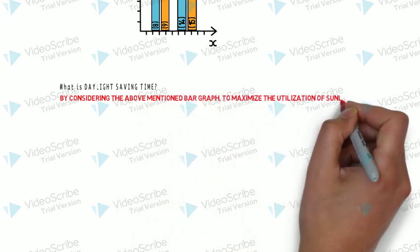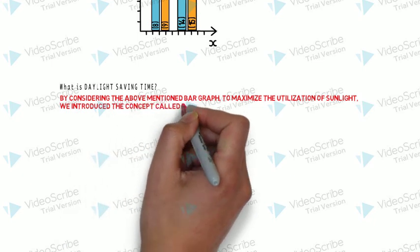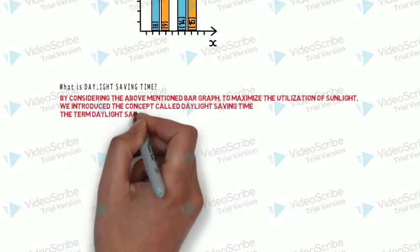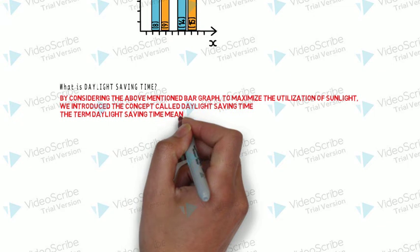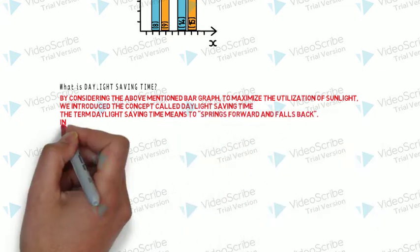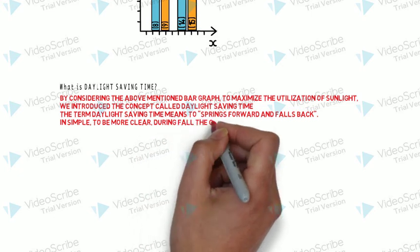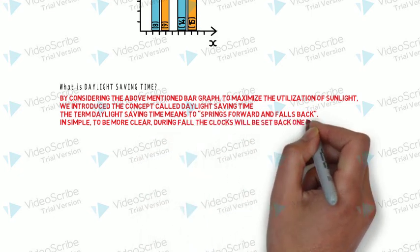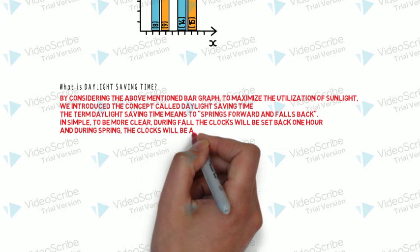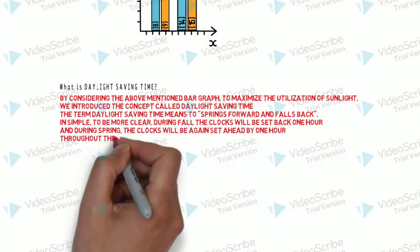To maximize the utilization of sunlight, we introduce the concept called daylight saving time. The term means to 'spring forward and fall back.' To be more clear: during fall, the clocks will be reset back by one hour, and during spring, the clocks will be set ahead by one hour throughout the country.